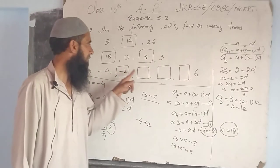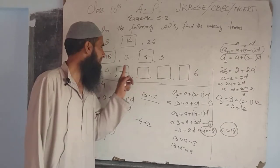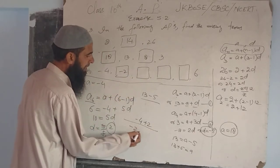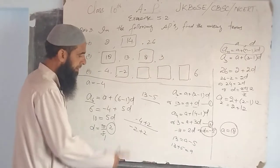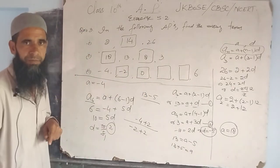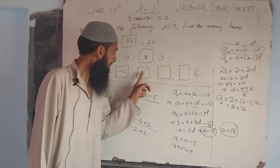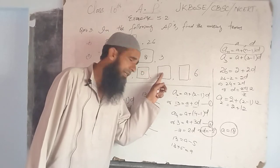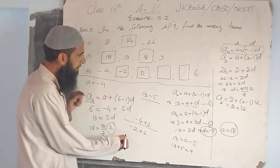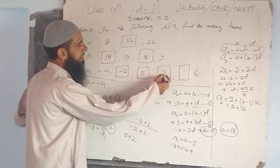Third term is second term plus common difference. Second term is minus 2, common difference is 2, so minus 2 plus 2 becomes zero. The next term is this term plus common difference, that is 0 plus 2, we have 2.